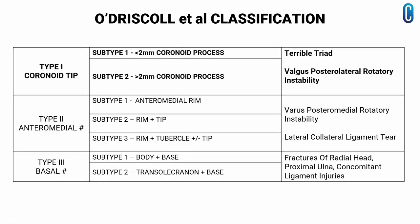Type 1 is tip of coronoid fracture. It is further subtyped into type 1 and type 2 if less than or more than 2 mm coronoid process height. This type is most associated with terrible triad dislocations and valgus posterolateral rotatory instability.